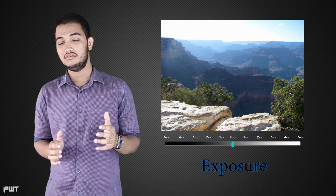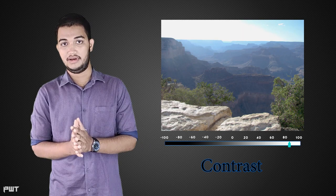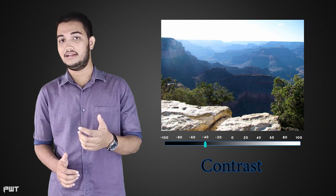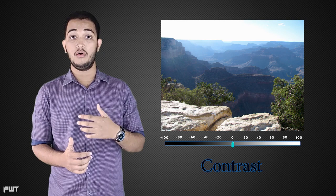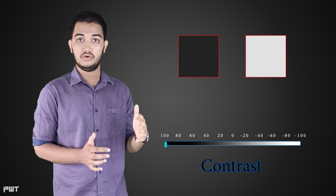Now let's talk about contrast. I will cover the theory here and the practical part in Part 2 in Photoshop. When you have a pixel that is dark and a pixel that is white — like a background and an object — if you have a gray pixel that is somewhere between dark and light, when you add contrast that gray pixel becomes darker and the white becomes more white.